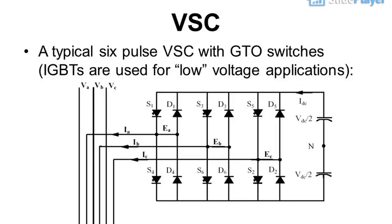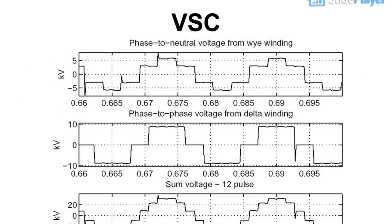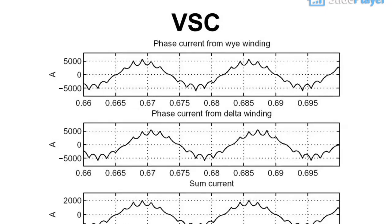VSC: a typical 6-pulse VSC with GTO switches. IGBTs are used for low voltage applications. To reduce harmonics, multi-pulse converters and filters are used. For example, for a 12-pulse VSC.